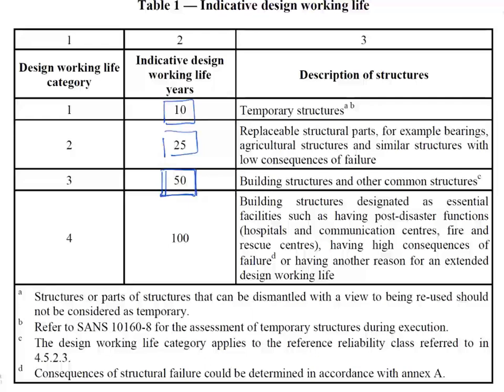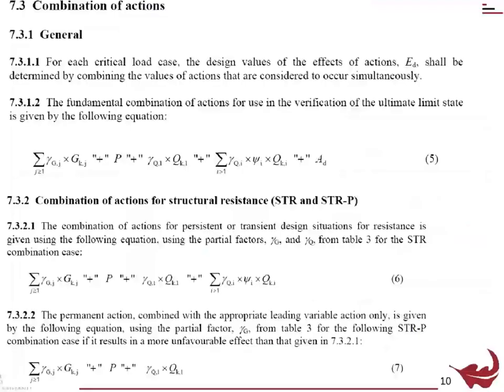Building structures designated as essential facilities having post-disaster functions — if something bad happens you don't want to have to fix it up. If the worst wind comes along, hospitals, communication, fire rescue, etc. still need to keep going, so you design those for 400 years. This would not cover specialist things like nuclear facilities.